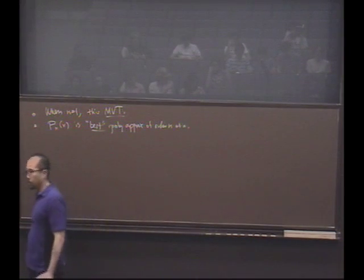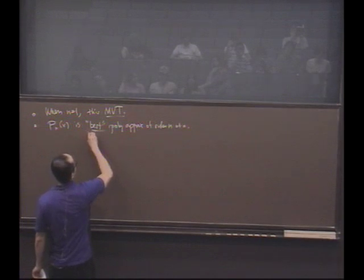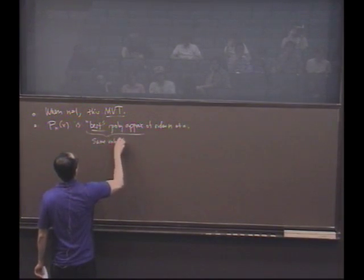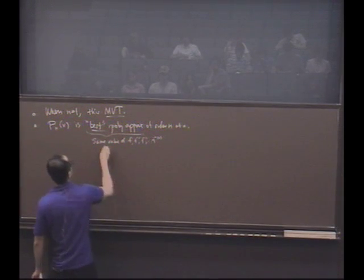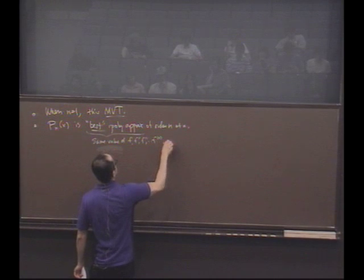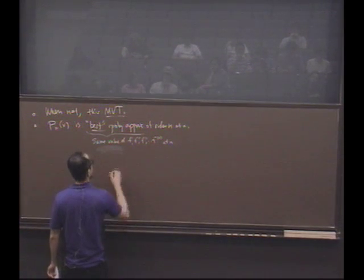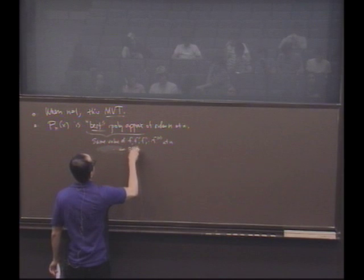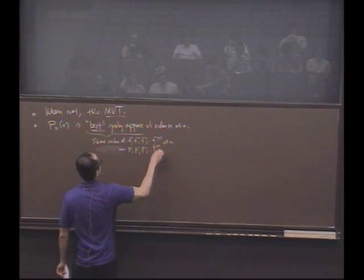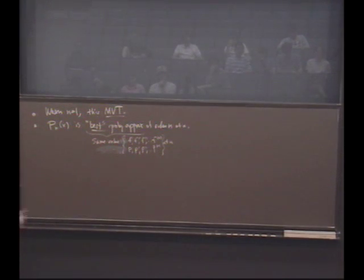Now what do I mean by best here? What I mean is I've constructed a polynomial that has all the same value in derivatives up to the nth. Same value of f, f prime, f double prime, through f super n at a. Same value of the polynomial and p, p prime, p double prime, p the nth derivative at a. So in other words, these things all correspond. The first derivative of the polynomial, the first derivative of f, actually has the same value at a.